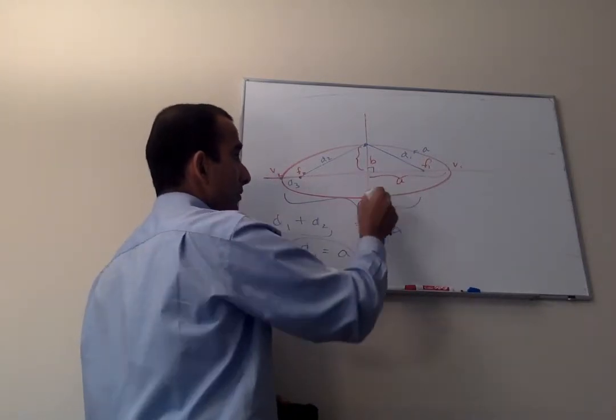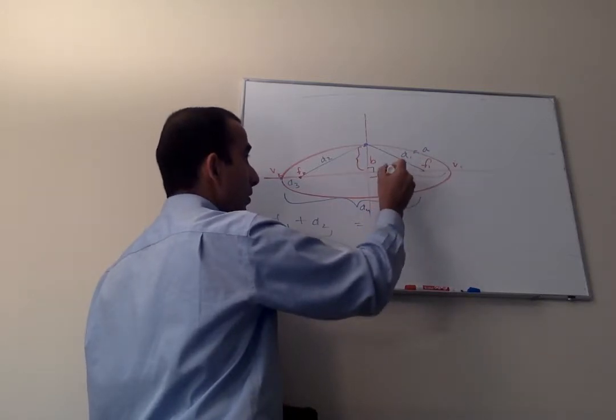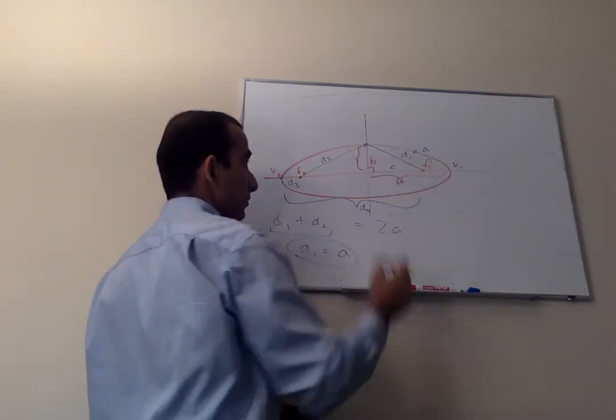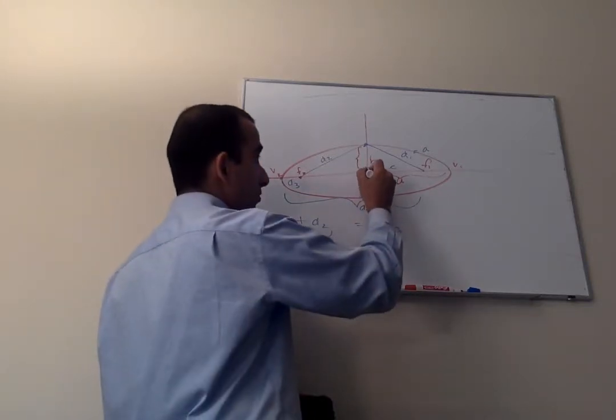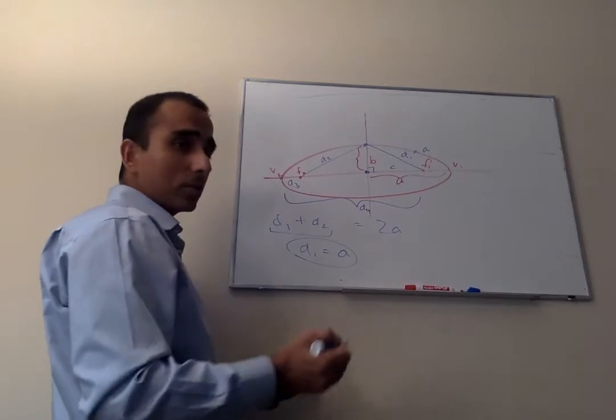Now, this distance over here, we can call C, this distance right here. That's the distance from the center of the ellipse to the focus. It's also called a focal distance.